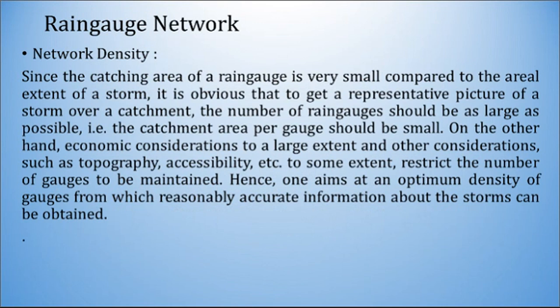First of all we will discuss about the network density of these rain gauges. Since the catching area, that is catchment area of a rain gauge, is very small compared to the total aerial extent of a storm, it is obvious that to get a representative picture of a storm over a catchment, the number of rain gauges should be as large as possible, that is the catchment area per gauge should be small. You should have enough rain gauges to get a clear picture of the storm, that is rainfall, because the catchment area is a widespread area and if you have very small amount of rain gauge stations installed, then you will not get accurate data for a wider area.